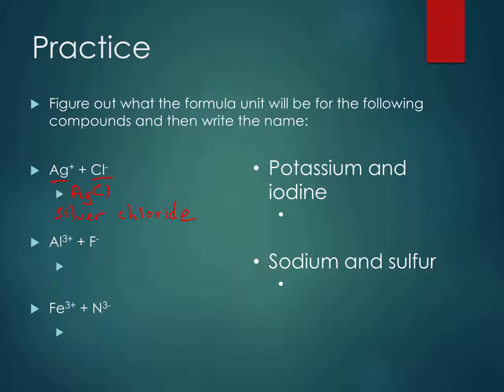So Al three plus and F minus. I have three plus charge from the aluminum, one minus for fluorine. So that means I'm going to need three fluorine, or fluoride atoms, to balance it out. So I have AlF3, and that'd be aluminum fluoride.